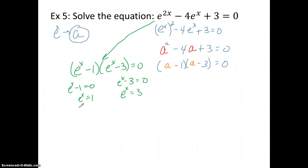What do I do with this? I change it into its logarithm form. So natural log of 1 equals x. Natural log of 3 equals x. Well, what do I know about the natural log of 1? That is 0, and this one is just natural log of 3. And there we go. We have two answers. Okay, x equals 0, or x equals ln 3.